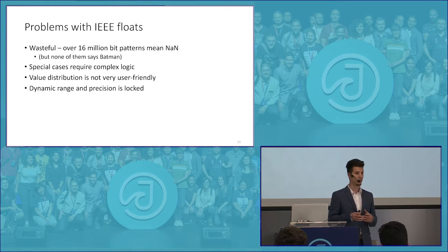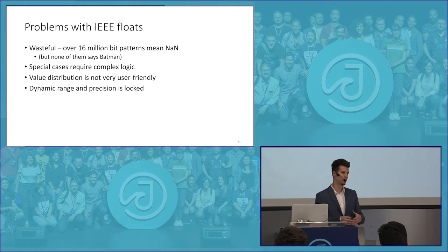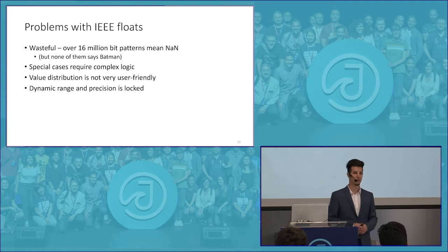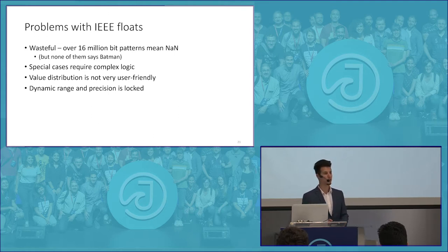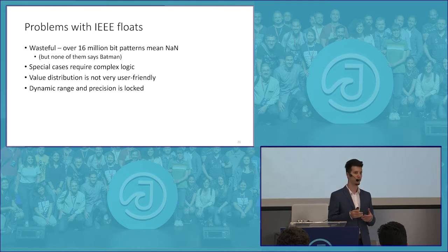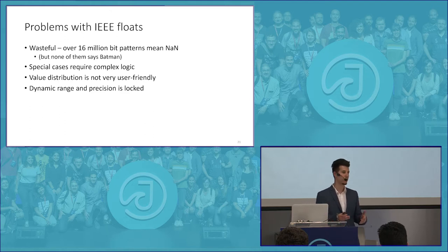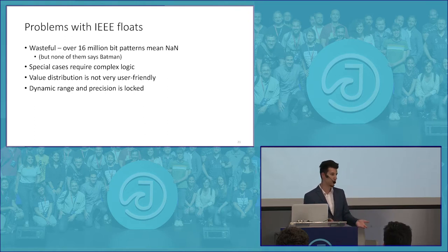Another problem is that there are many bit patterns that must be handled differently from regular number bit strings, requiring different logic that takes up more chip space, making the whole chip more complex. The value distribution is not user-friendly — real-world calculations tend to prefer numbers around 1, and floating-point numbers don't accommodate this. We usually scale computations to 1 anyway because those are easier to comprehend. Also, the dynamic range and precision are locked — you have a certain number of bits and the range and precision they represent is fixed by the standard, and you can't change it.